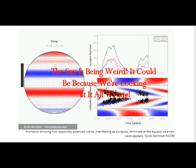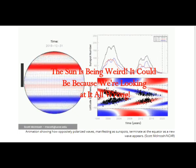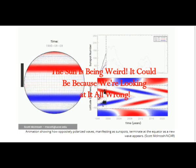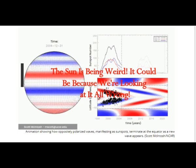Our sun is being weird, but scientists are saying it could be because we're looking at it the wrong way. Something weird is going on with the sun.